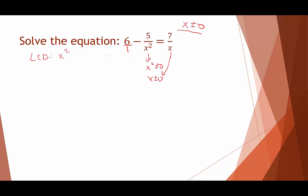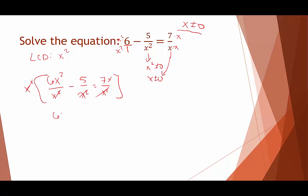We rewrite each fraction with denominator x squared: the term with x squared stays, the term with x gets multiplied by x. That gives us 6x squared over x squared minus 5 over x squared equals 7x over x squared. Multiplying everything by x squared cancels the denominators, leaving 6x squared minus 5 equals 7x.